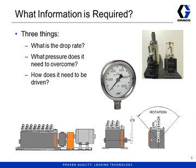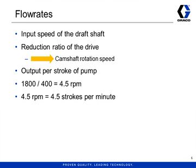However, from time to time there is no such information available. At that point, we really need to know three things: what is the drop rate or flow rate measured in drops per minute or pints per day? What pressure does it need to overcome? And how does it need to be driven? The flow rate of each pump in a box lubricator is the result of several factors: the input speed of the drive shaft, the reduction ratio of the drive and the resulting camshaft rotation speed, and the output range of the individual piston pumps.